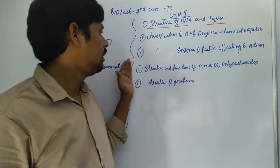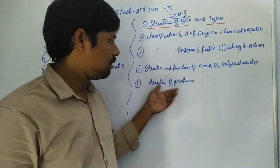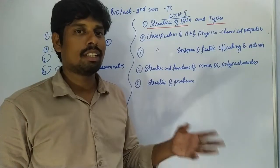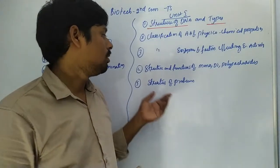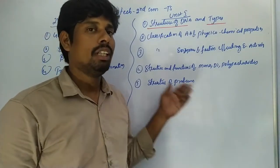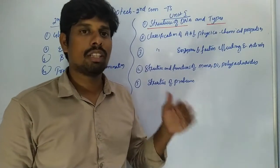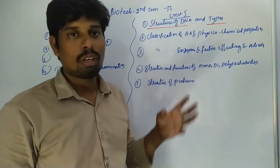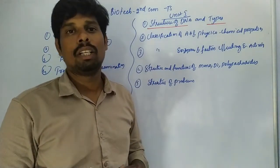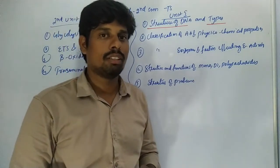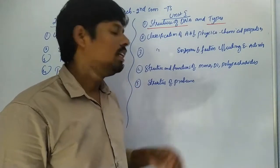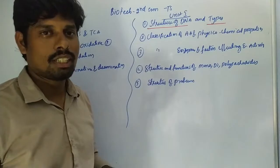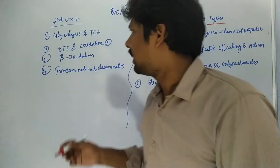The fifth important question is the structure of proteins: the primary structure, secondary structure, tertiary structure, and quaternary structure. The secondary structure includes beta sheets and loops. The most complex protein structure is also covered here.